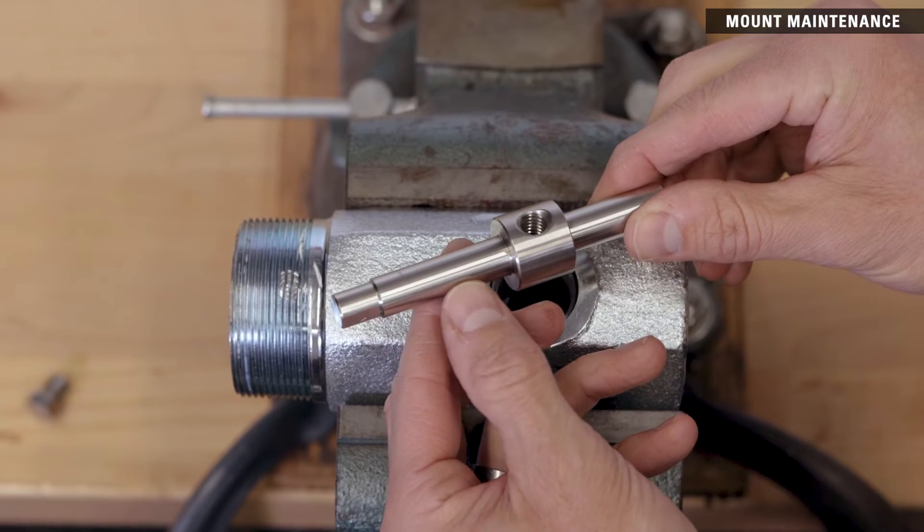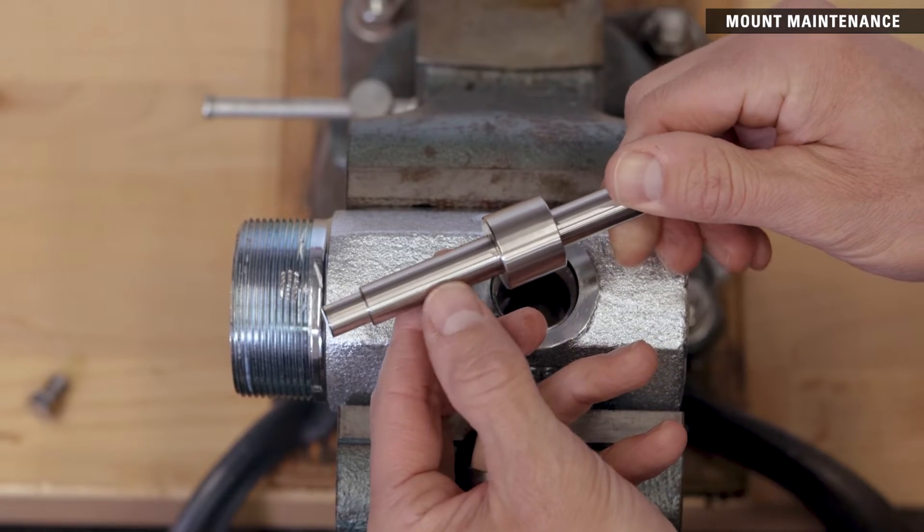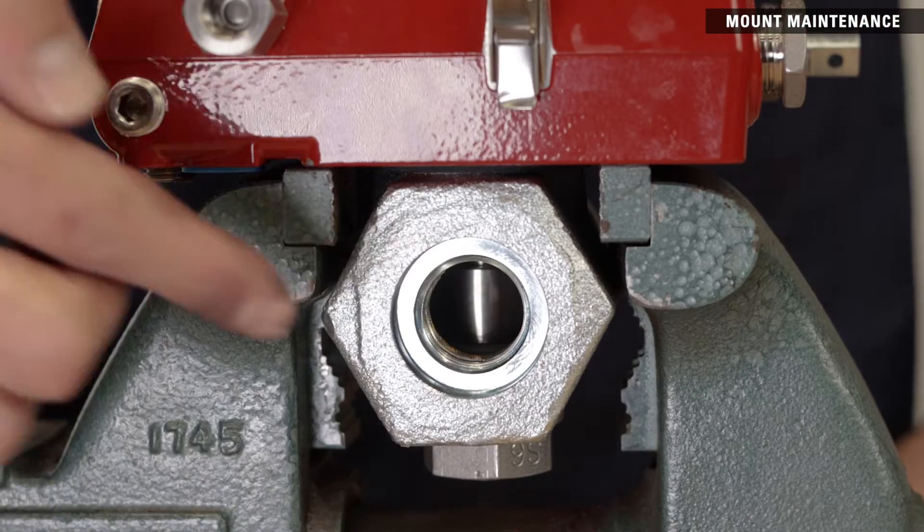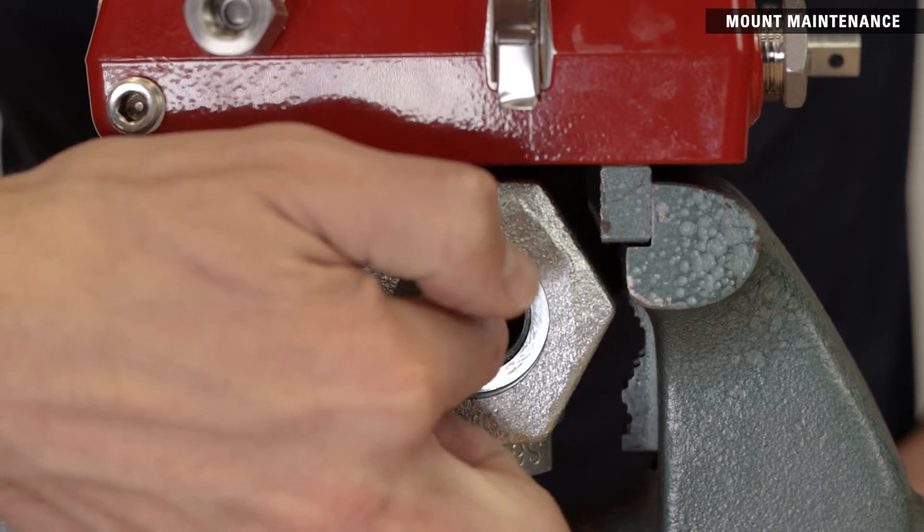Inspect the shaft for scoring, pitting, or other potential leak paths, especially around the sealing areas. Clean out any solids that have buildup inside of the mount.